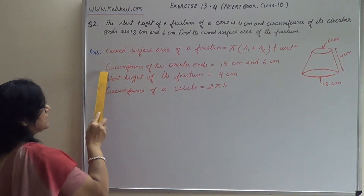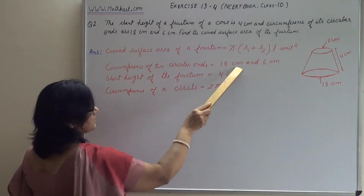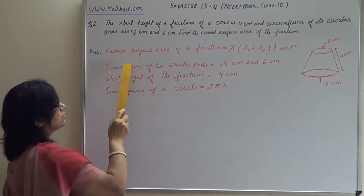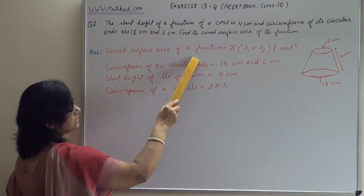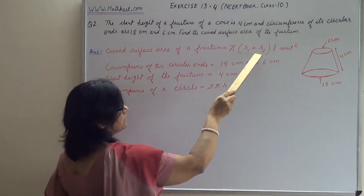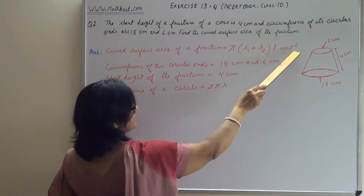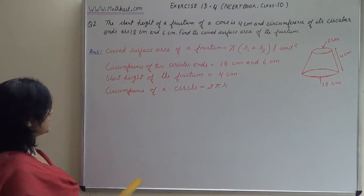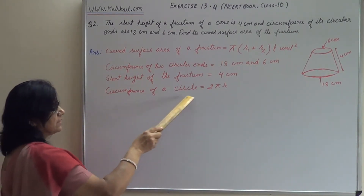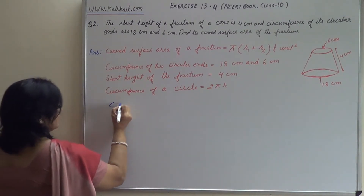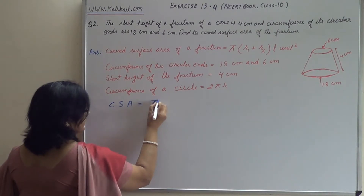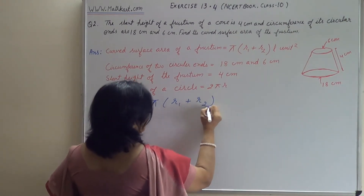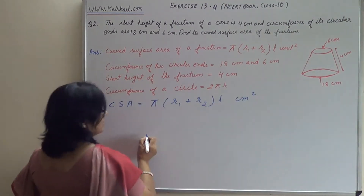The circumferences of the two circular ends are 18 cm and 6 cm, and the slant height of the frustum is 4 cm. We will use the formula: Curved Surface Area of a frustum = π(r1 + r2) × l. We will also use the formula: circumference of a circle = 2πr.